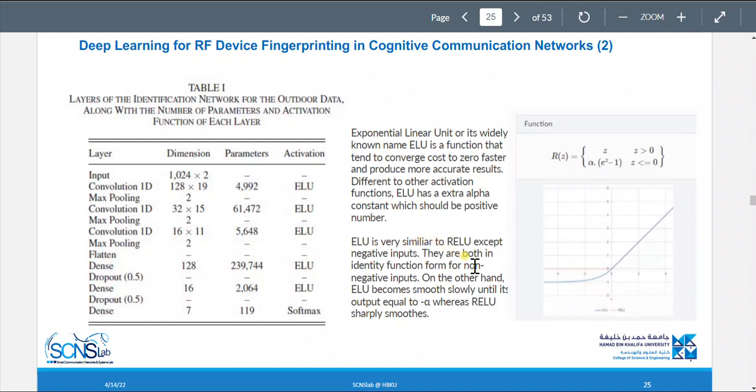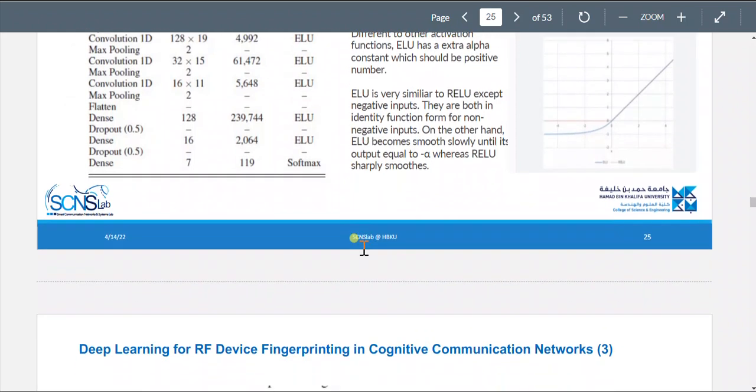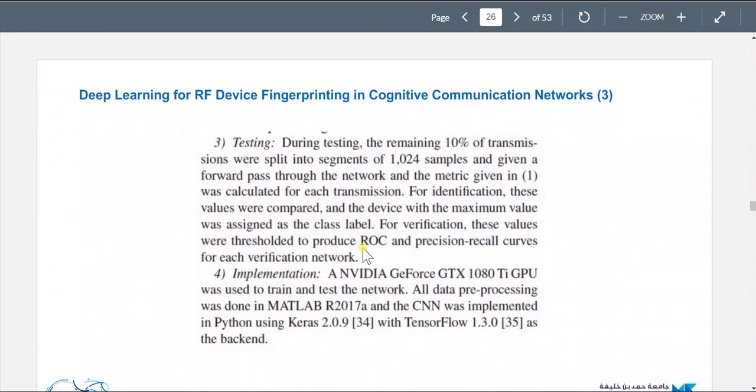They are both an identity function for non-negative inputs. On the other hand, ELU becomes smooth slowly until its output equal to negative alpha, whereas RELU sharply smooths. So this is just a comparison between RELU and ELU.